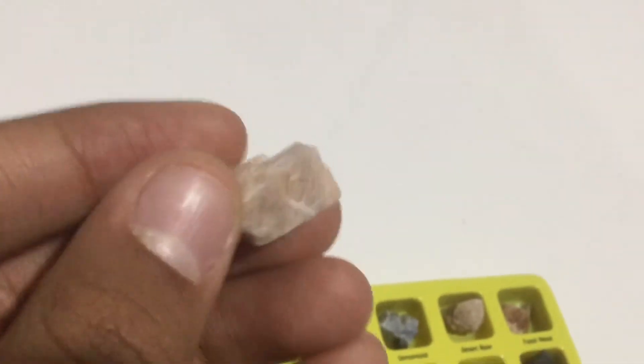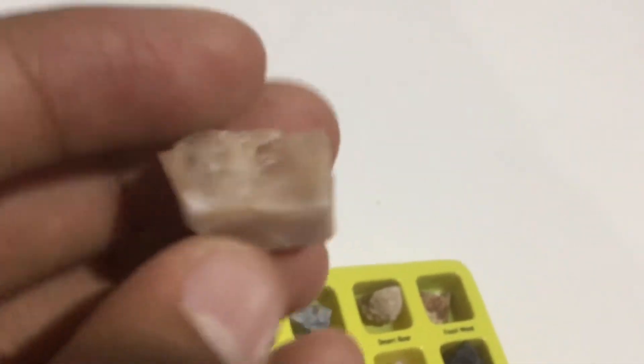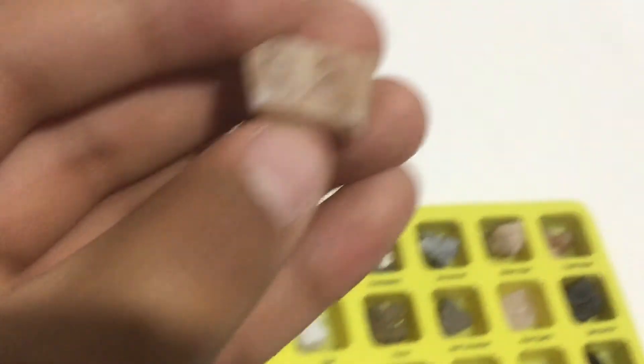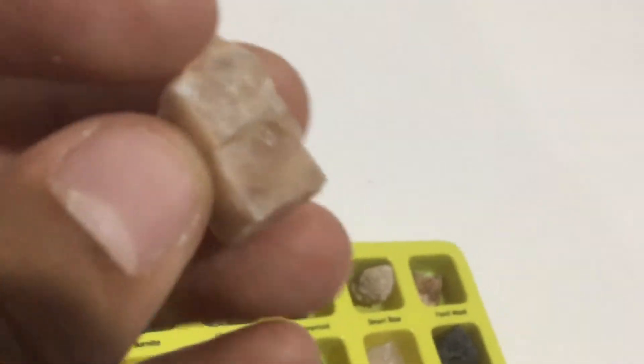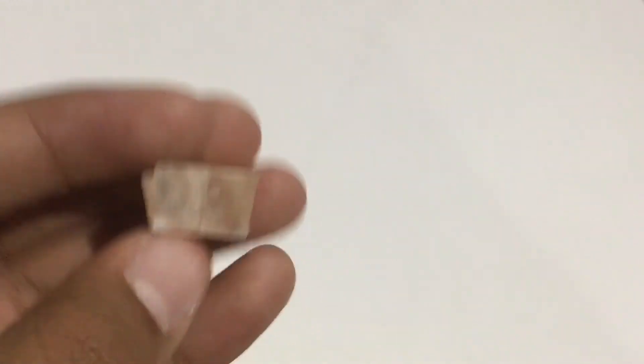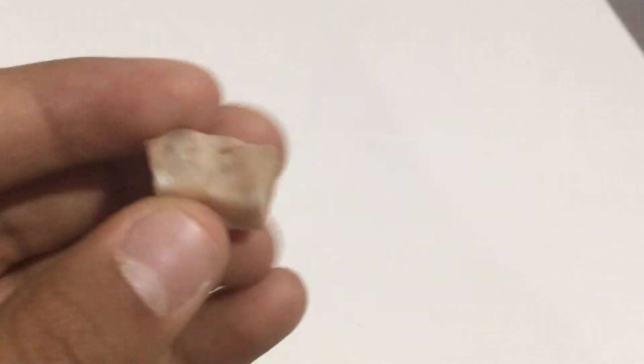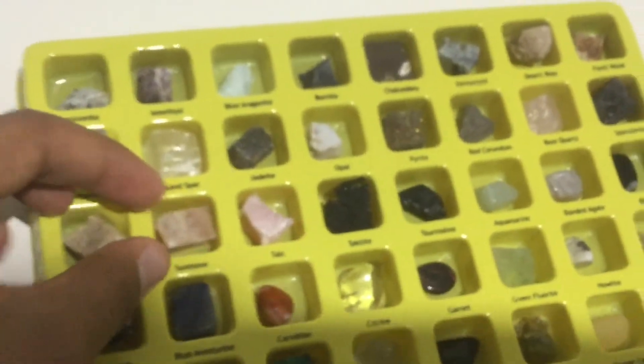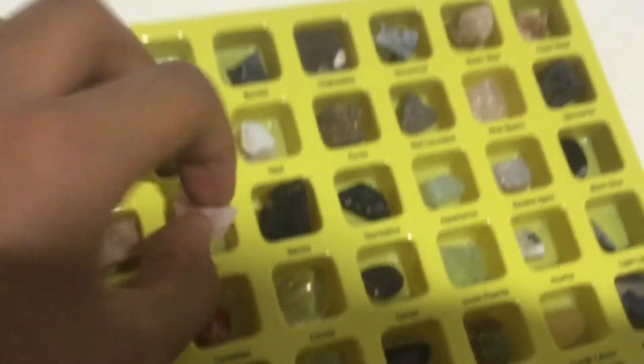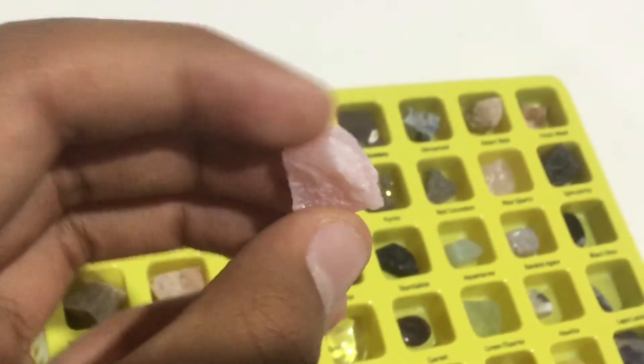This one is sunstone. I don't know if you can see, but it's like glittery. It's really cool. I don't know why it's called sunstone even though it's not really the colors.